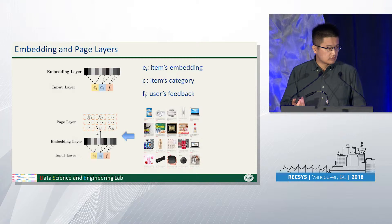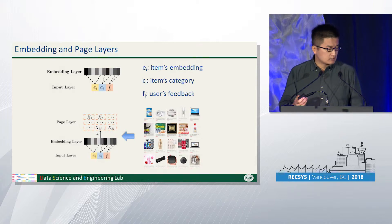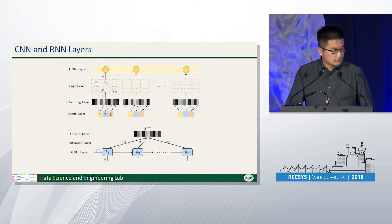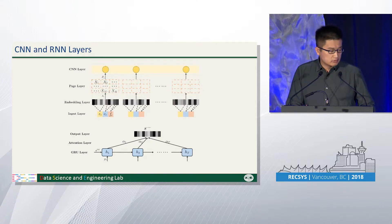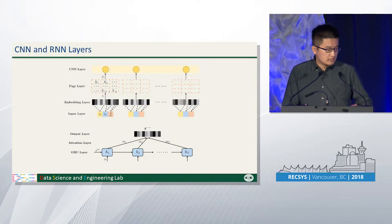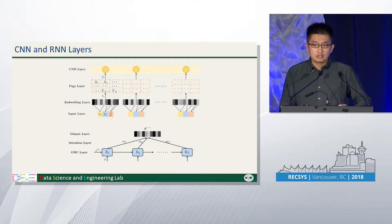We place the item representations in their original arrangement in the page and get a two-dimensional matrix similar to an image. Then we introduce a CNN layer to capture the spatial item displaying strategy in one page. Finally, we introduce a GRU with an attention layer to capture user's dynamic preference across different pages.